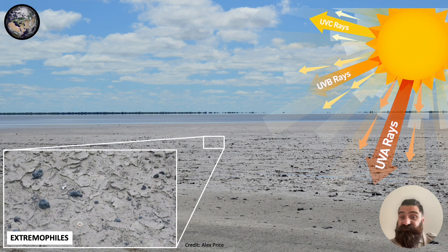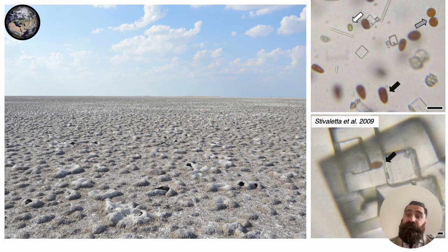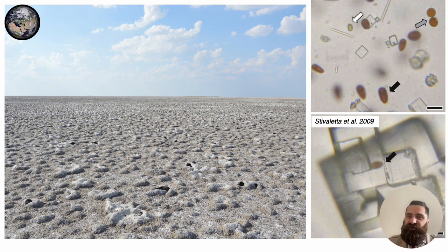These extremophiles are literally everywhere. The crust that forms on top of the pan is beautiful, and if you're lucky enough, inside these minerals you might find spores or even cells of these organisms — some of which live inside the minerals. They choose to live there because living inside a crystal, inside a mineral, can help them get rid of toxic chemicals or avoid the UV bombardment.